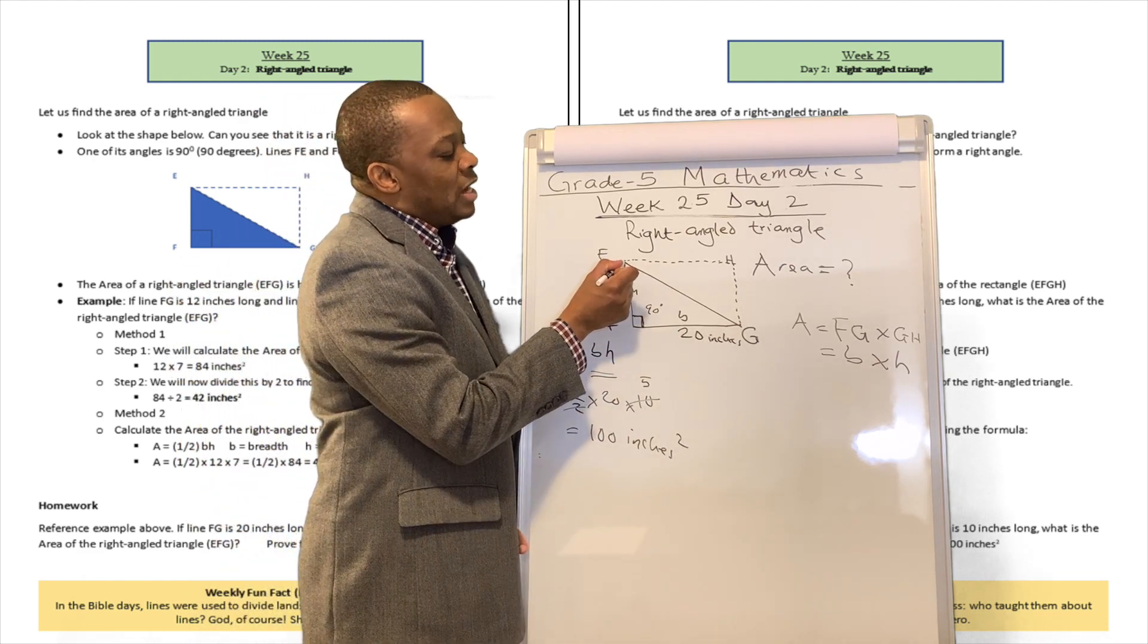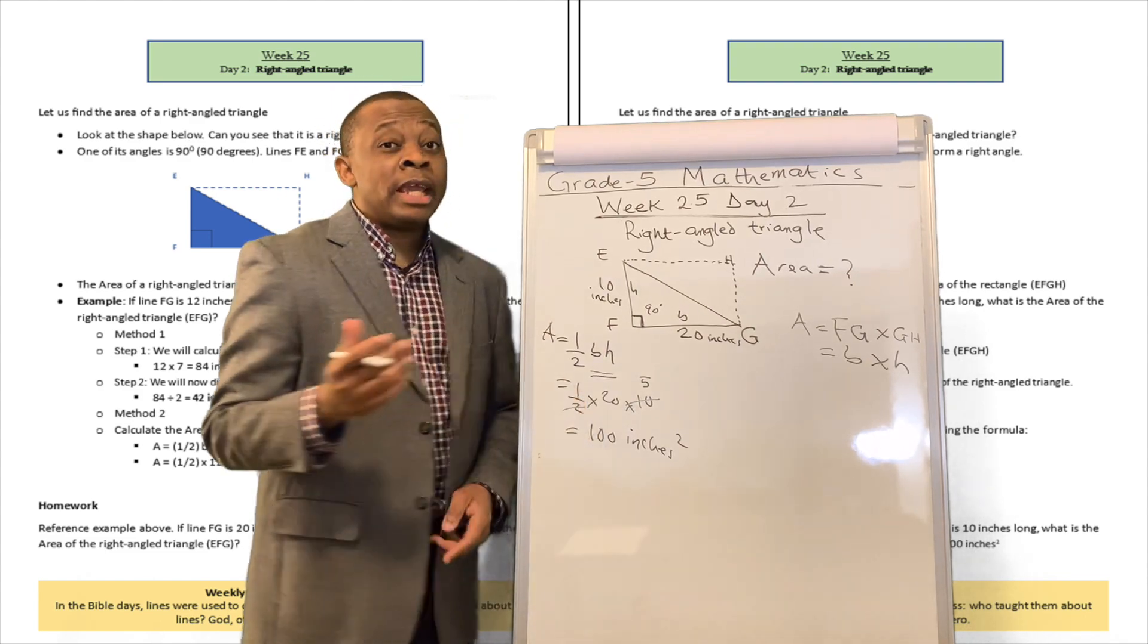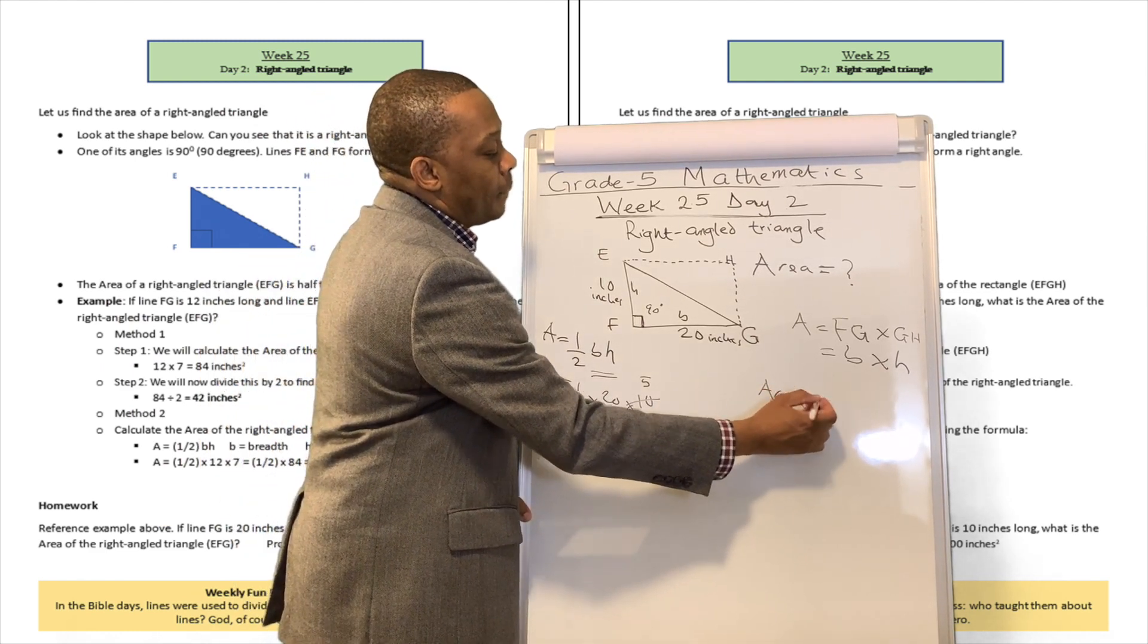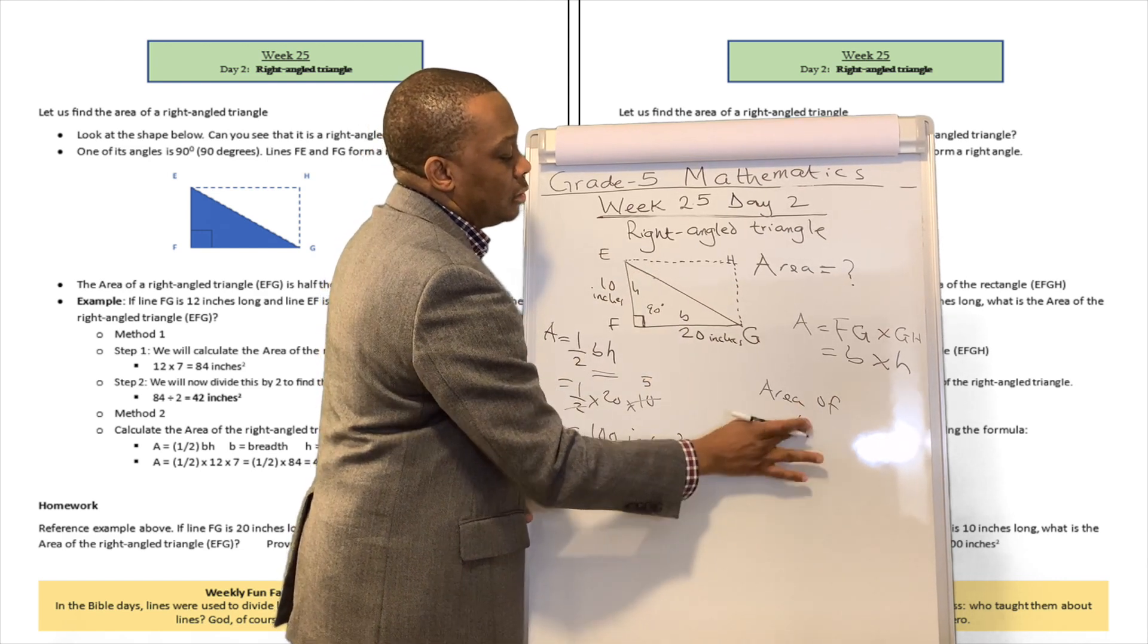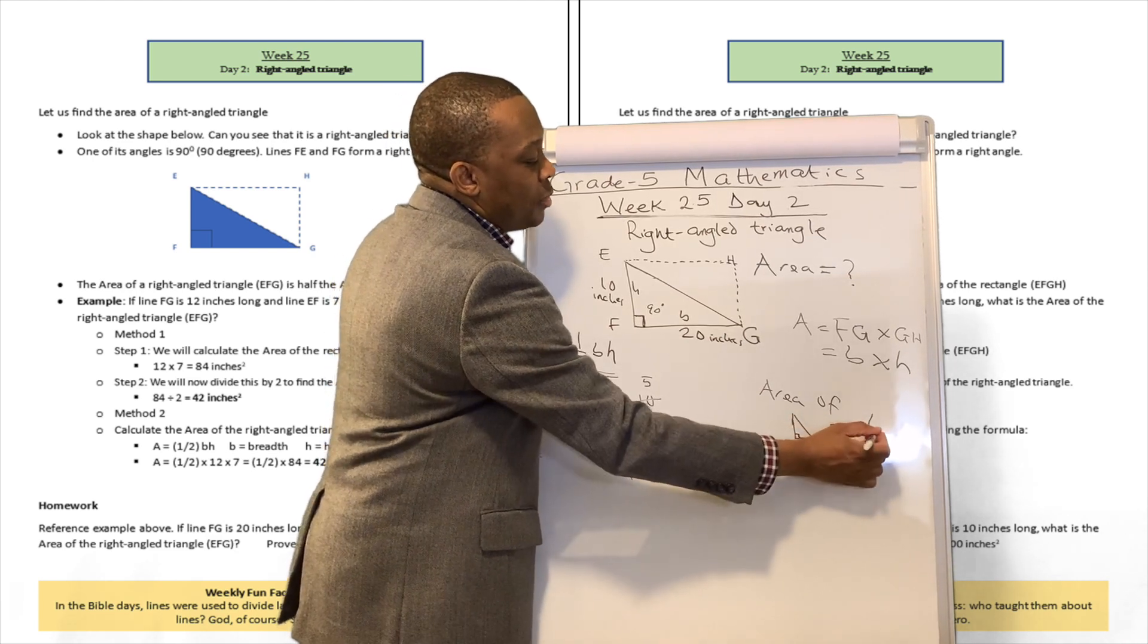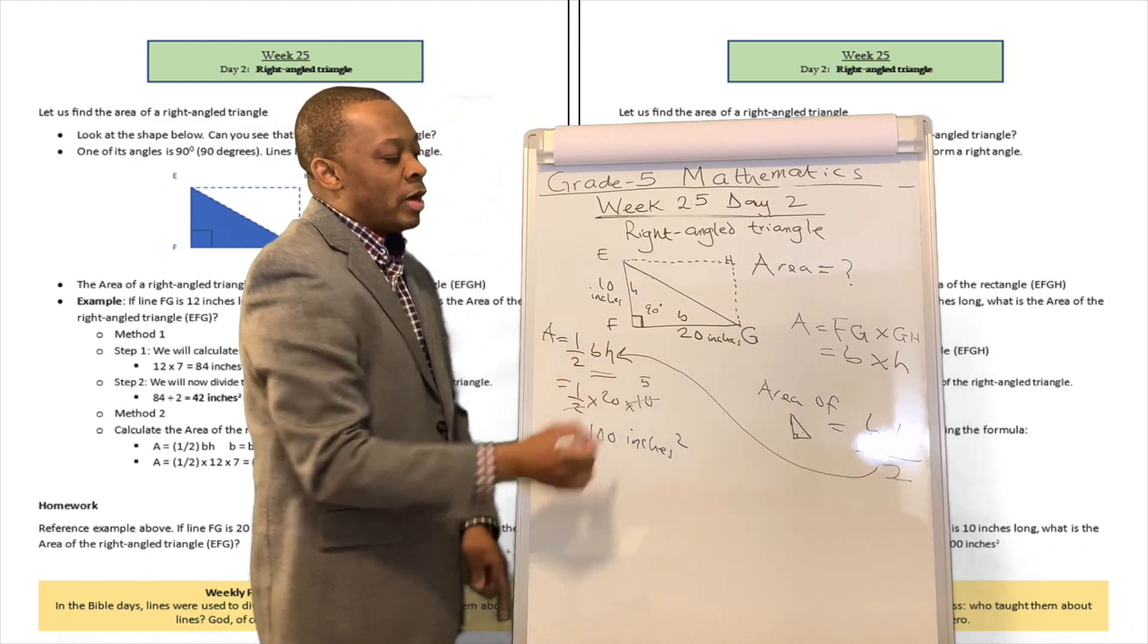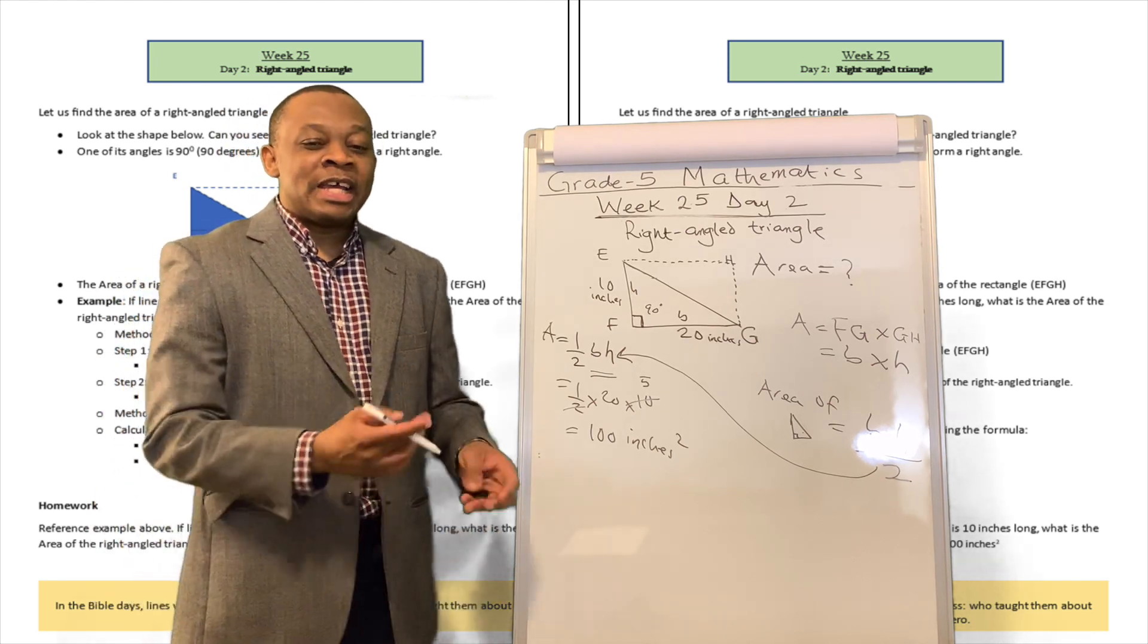But then, when we slice the rectangle into two with a diagonal line over there, then its area definitely has to be divided by two as well. So the area of this right-angled triangle is going to be B multiplied by H and divided by two, which is exactly this formula right over there. Did you see how that works? That's how we can do it.